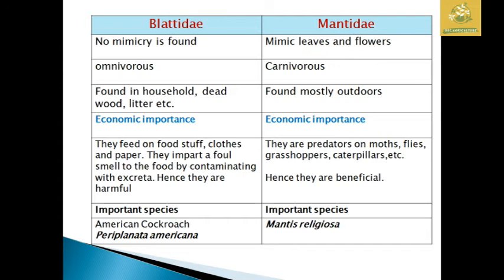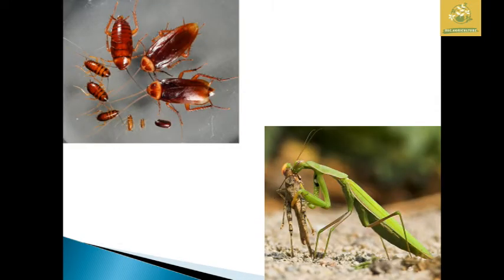The economic importance: Blattodea feed on food, clothes, and paper and impart a foul smell by contaminating with excreta, making them harmful pests. Mantidae, on the other hand, are predators of moths, flies, grasshoppers, and caterpillars, making them beneficial. Important species include the American cockroach (Periplaneta americana) and praying mantis (Mantis religiosa).